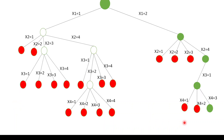Now, how do we represent this as a state space tree? Whatever we traced in tabular format can be represented as a state space tree. From the tree, x1=2 (Q1 in column 2), x2=4 (Q2 in column 4), x3=1 (Q3 in column 1), and x4=3 (Q4 in column 3), giving us the valid solution.